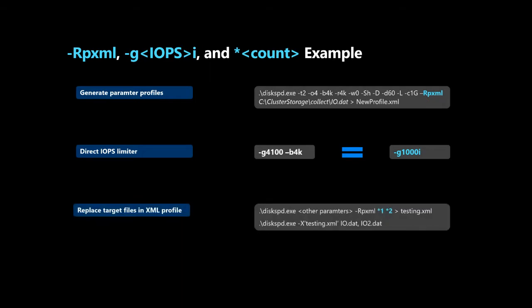The next example is for replacing target files in the XML profile. If you want to send IO to two target files in the future, you can initially create the profile with two target templates by specifying star 1 and star 2. Later when you run the profile, all you need to do is specify the new target files such as io.dat and io2.dat. Note that you'll run into an error in three scenarios: if you provide fewer target files than defined, if you provide none, or if you provide too many target files — for example, if the profile defines two but you provide three.